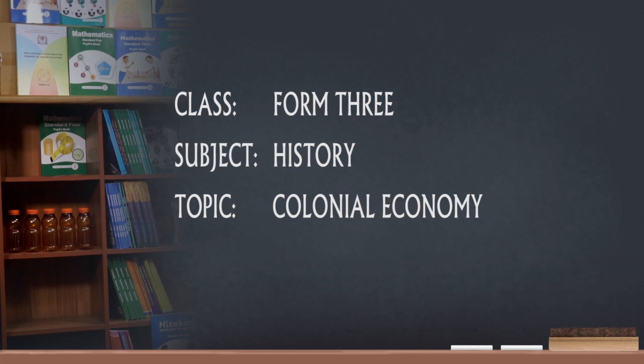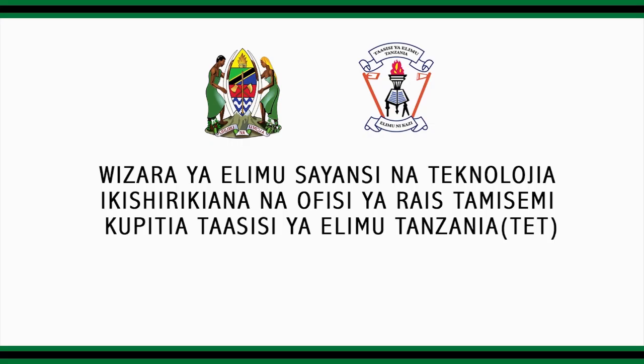Now, students, we proceed to study the short summary of our topic of colonial economy. Lesson Summary: What is colonial economy? Colonial economy was the system of production and consumption of cash crops and minerals which were introduced in African colonies by the colonialists in order to fulfill their economic demands, such as raw materials, markets, areas for investment, areas for settlements, and cheap labor as well.